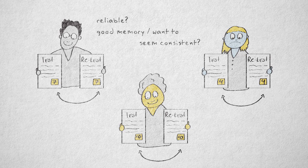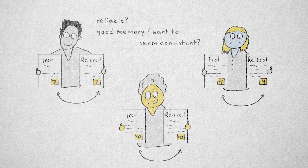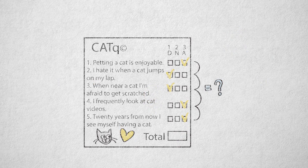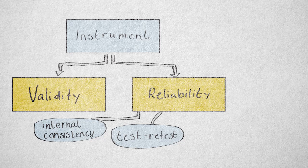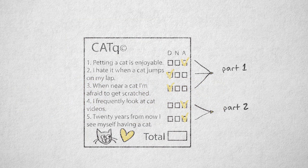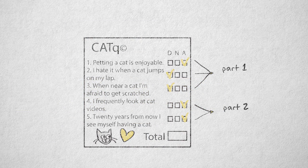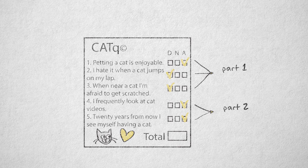One way to solve this problem is to look at the consistency not between different times, but between different parts of the instrument at one time. This is referred to as internal consistency. We compare responses on the first three and last two questions. Of course, you can only do this if the instrument consists of several questions that are supposed to be comparable and measure the same construct.